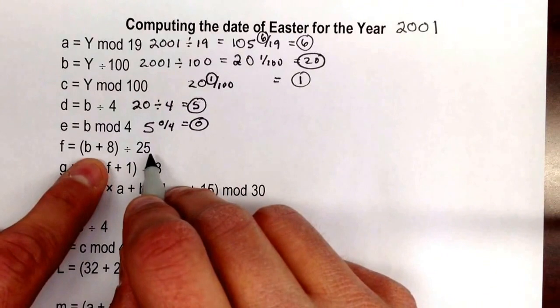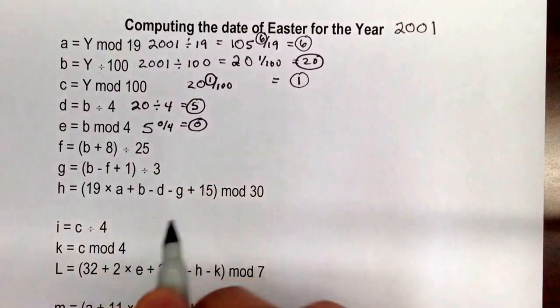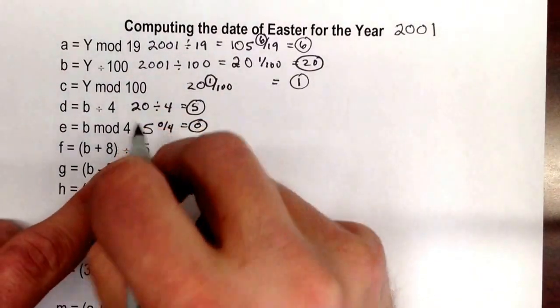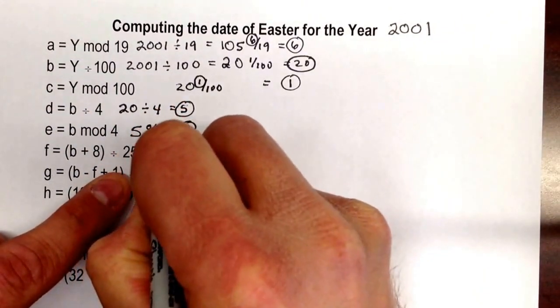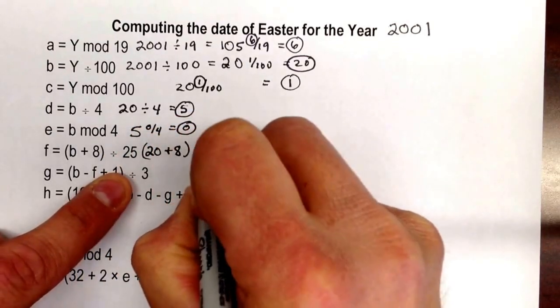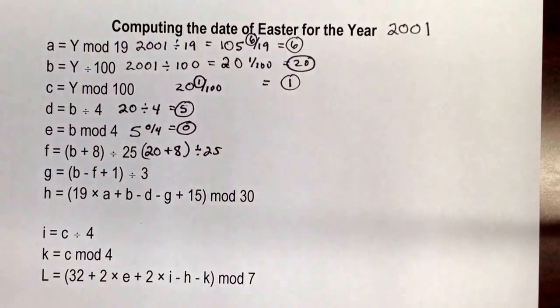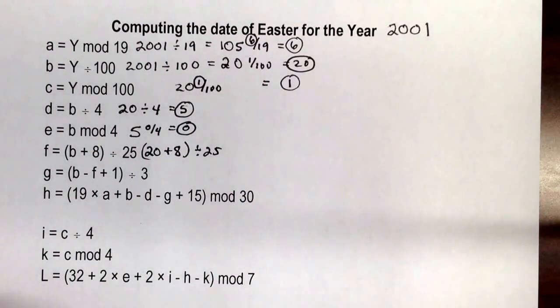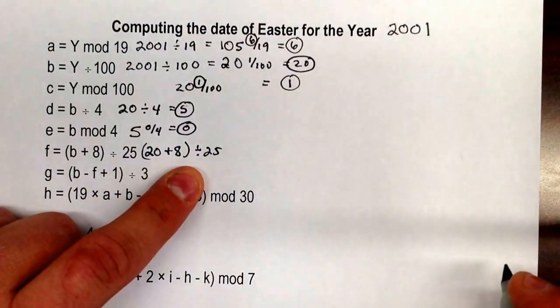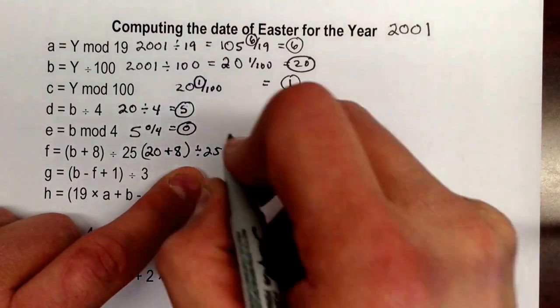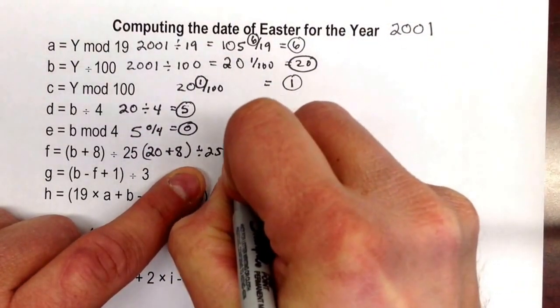Next is f, we take b. So for this one it's going to be 20 plus 8. This b back to here is 20, if you notice from right there. So this is 20 plus 8 divided by 25. And this one is going to equal 28/25 really, which is, if you put that in the calculator, 28/25 is 1 and 3/25, but all we want is the integer anyway. So integer division gives us 1 for that.